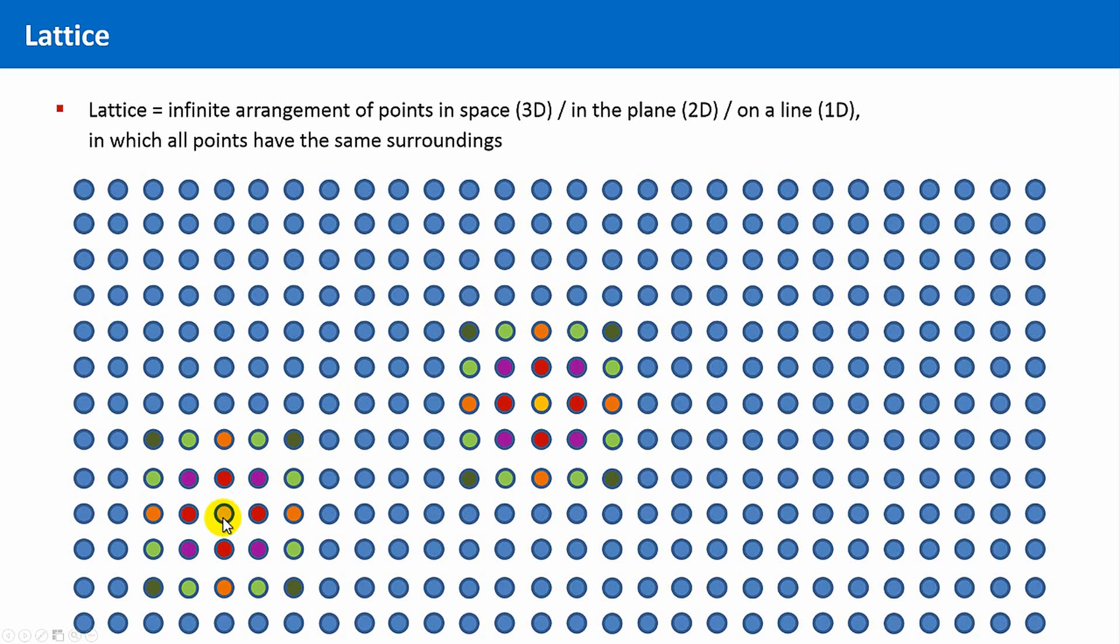And this point has also the same surroundings. Now, it should be also clear why a lattice has to be infinite according to its definition. Namely, because a point at the border does not have the same surroundings as a point at the center. Therefore, there must be no border.